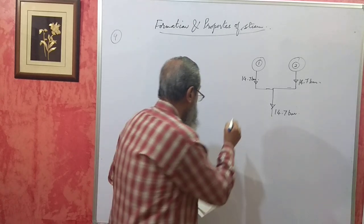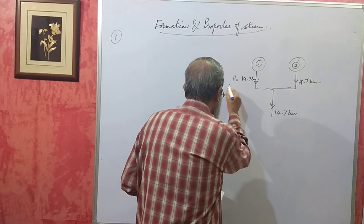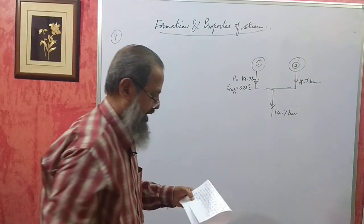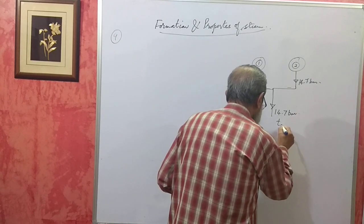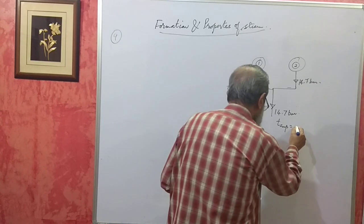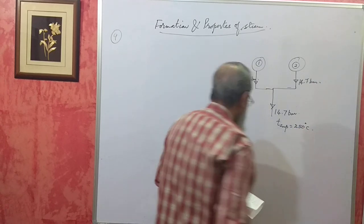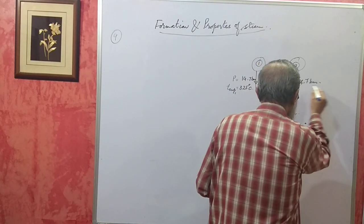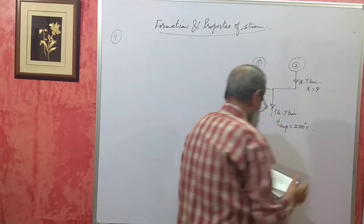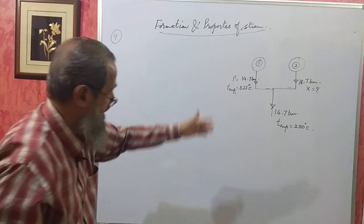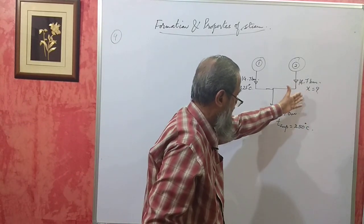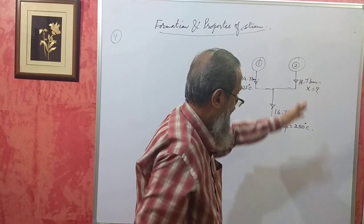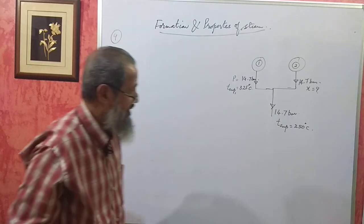The temperature of steam from the boiler with the superheater is T_sup = 325°C. The mixed steam temperature here is 250°C. We have to find the dryness fraction x of the steam coming from the boiler without the superheater. If x is less than 1, it is wet steam; if equal to 1, it is dry saturated steam.